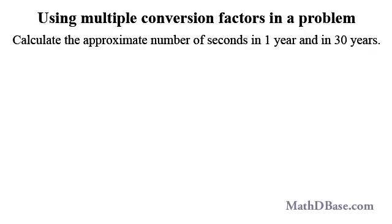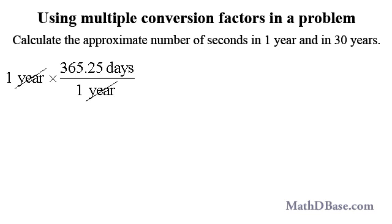For example, let's calculate the approximate number of seconds in one year, and in 30 years. There are approximately 365 and a quarter days in one year. We will use the 365 and a quarter days per year conversion factor instead of one year per 365 and a quarter days, so that the year unit will be in the denominator and will cancel.